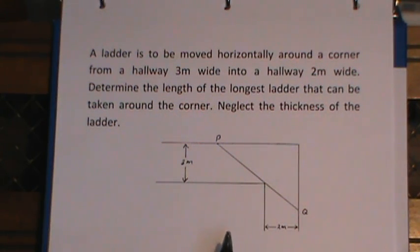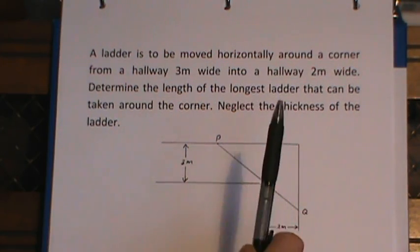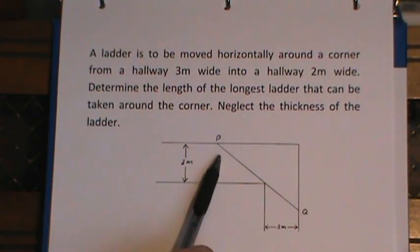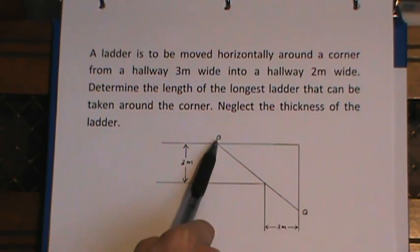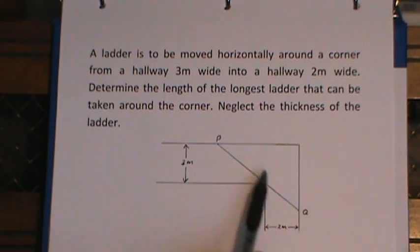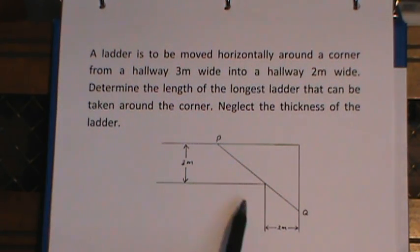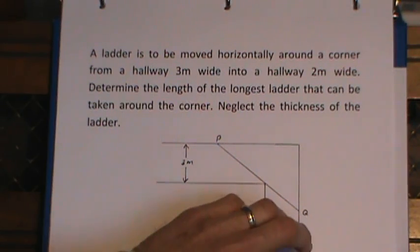Now we're trying to find the longest ladder that we can get around this corner, which means the problem for us is to find the shortest distance from P to Q. Because the shortest distance—you see if it's way over here it's quite long, same thing down here—so the shortest distance for PQ will be the longest ladder that we could get around the corner. So actually it's a minimum problem.